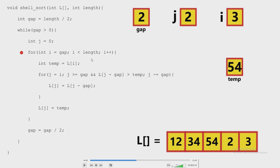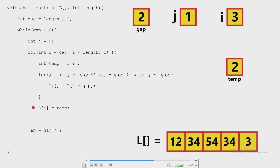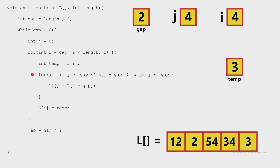When i becomes 3, your element pointer moves to 2 and the pointer minus gap comes to 34. Temp becomes 2. j becomes 3, and the value changes — 34 gets shifted. This is how this algorithm works. It takes the insertion sort, which was already a good algorithm, and makes it way more efficient by using a varying gap that eventually reduces to 1. That's how shell sort basically works.